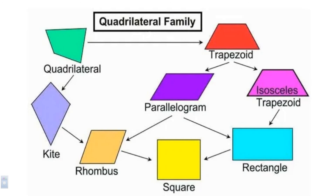Skipping to the kite: in a kite, none of the sides are parallel. However, the top two sides that are adjacent to each other are congruent, and the bottom two sides are also congruent.